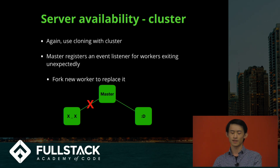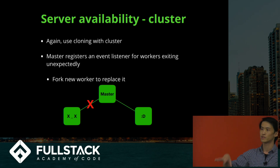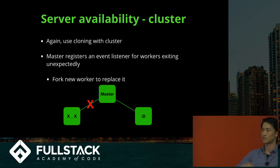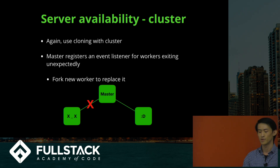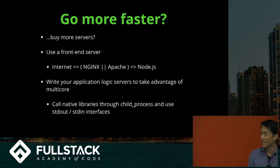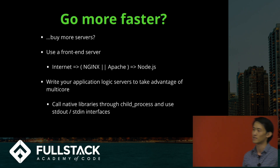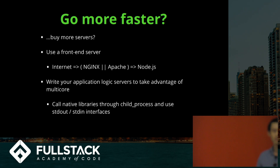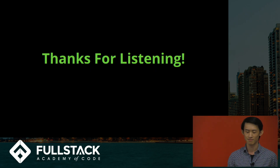Server availability: you can use the same cluster to register an event listener for any workers that crash unexpectedly. When you detect that, you can just spin off another worker so it can continue handling HTTP requests. To go further, you can buy more hardware, use a front-end server like Nginx or Apache for more sophisticated load balancing, take advantage of multicore with child processes to call native libraries for computationally expensive endpoints. It depends on your use case, but there are options. Thanks.